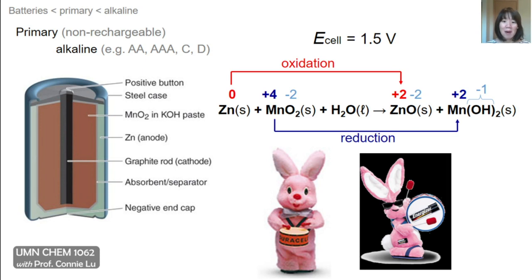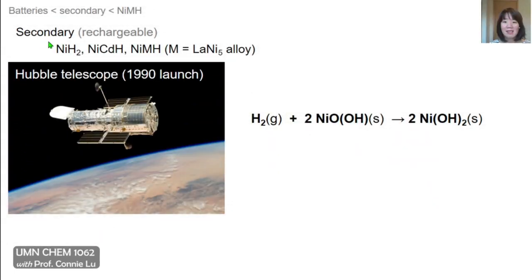Batteries often are labeled with positive and negative signs, and these match the signs that we would assign to the different electrodes in a voltaic cell. Zinc, which is the most reducing of the two species in this redox reaction and is also the anode electrode, would have a negative sign where the electrons originate. The positive sign is associated with the graphite rod, which is really an inactive electrode, and the actual oxidizing agent is the manganese oxide.